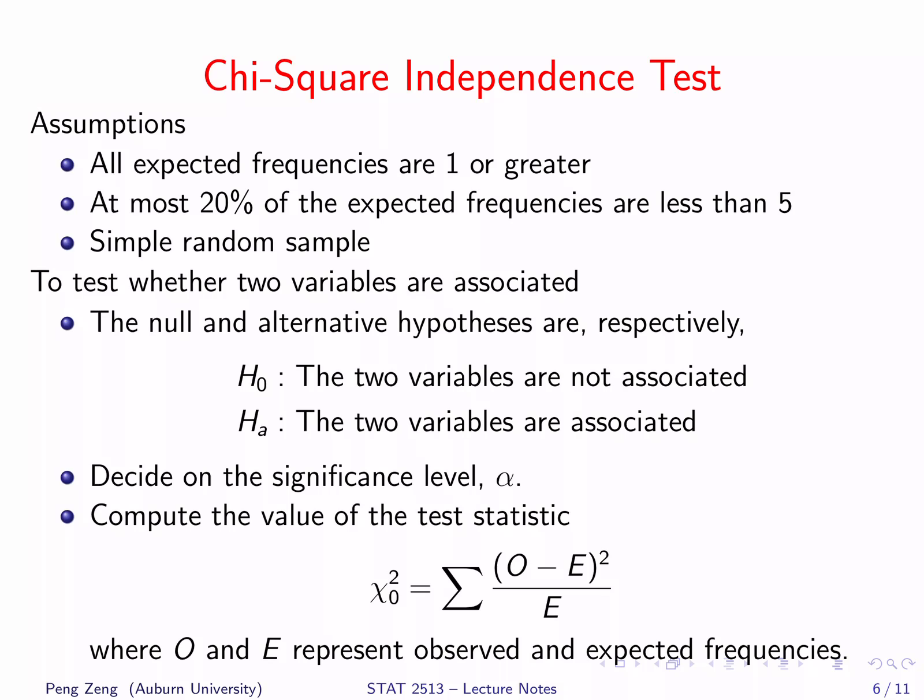This slide lists the steps for the chi-square independence test. It is used to test whether two categorical variables are independent. It assumes that all expected frequencies are 1 or greater, and at most 20% of the expected frequencies are less than 5. These assumptions ensure that the test statistic approximately follows a chi-square distribution. The assumptions also include simple random sample. The null hypothesis is that the two variables are not associated, and the alternative hypothesis is that the two variables are associated. We need to decide on the significance level alpha — usually alpha equals 0.05, though occasionally alpha equals 0.1 or 0.01.